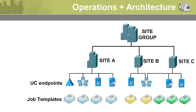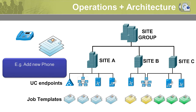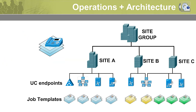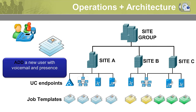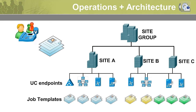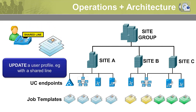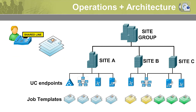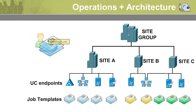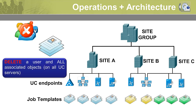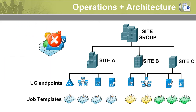The provisioning system is architected around the concept of sites, locations, and templates. Job templates are used to define the actual MACD operations on those Cisco UC servers defined for that particular site. For example, adding a new phone, or adding a new user with voicemail and presence, updating a user profile by adding a shared line, or deleting a user and all associated objects across all Cisco UC servers.